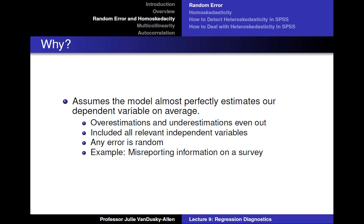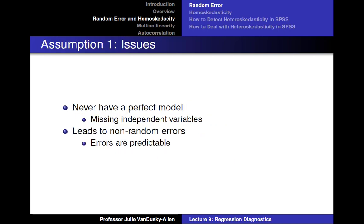For example, let's say we're running a model using survey data where we use party identification as the dependent variable and income as the independent variable. For one particular observation, the survey respondent accidentally chose the wrong answer for their income because they took the survey too quickly. The model might incorrectly predict that respondent's party identification because they gave the wrong information about their income. That is a random error — it is not something that happens to every respondent. Regression allows for this random error to exist. Of course, we never have perfect models. We never have every single independent variable in our models. As a result, our errors are not random; our errors become predictable for certain observations.